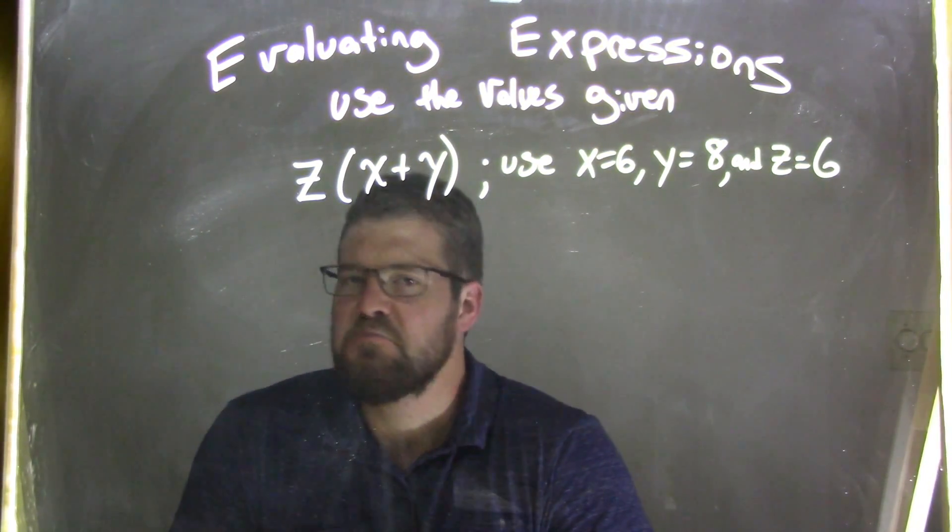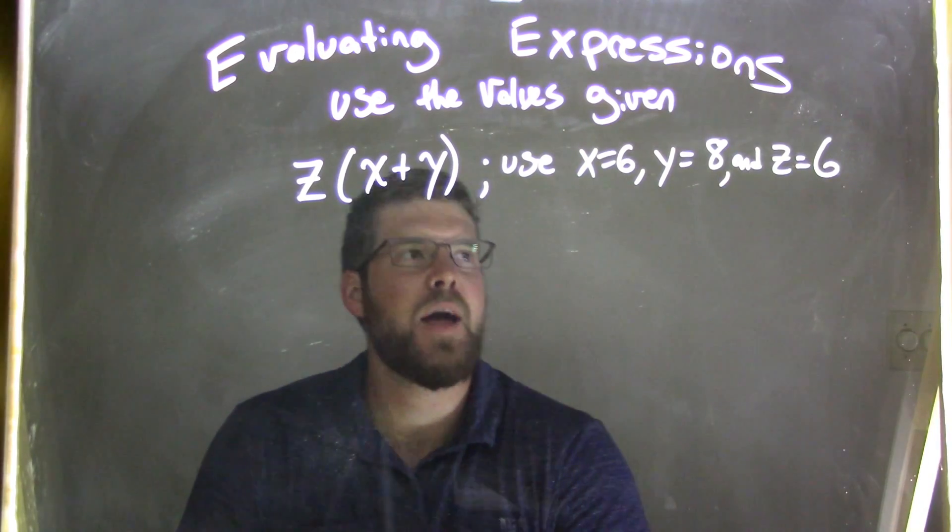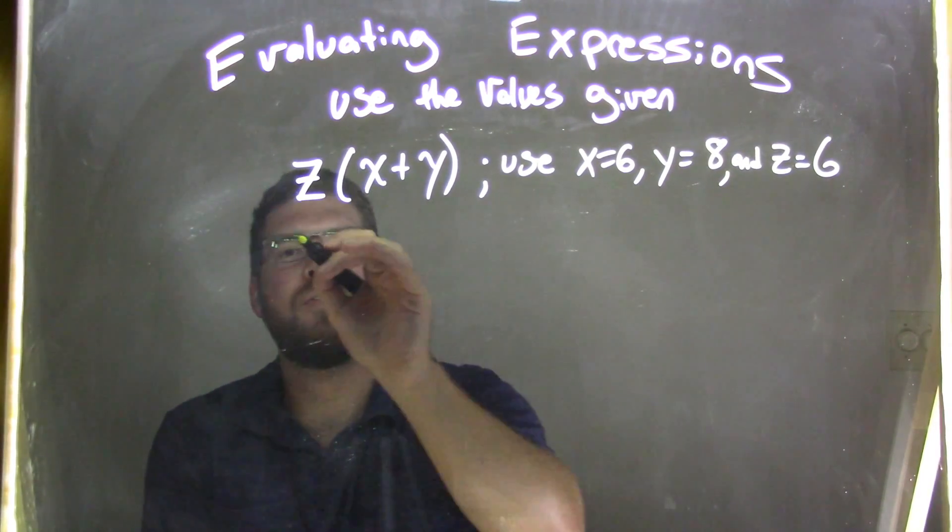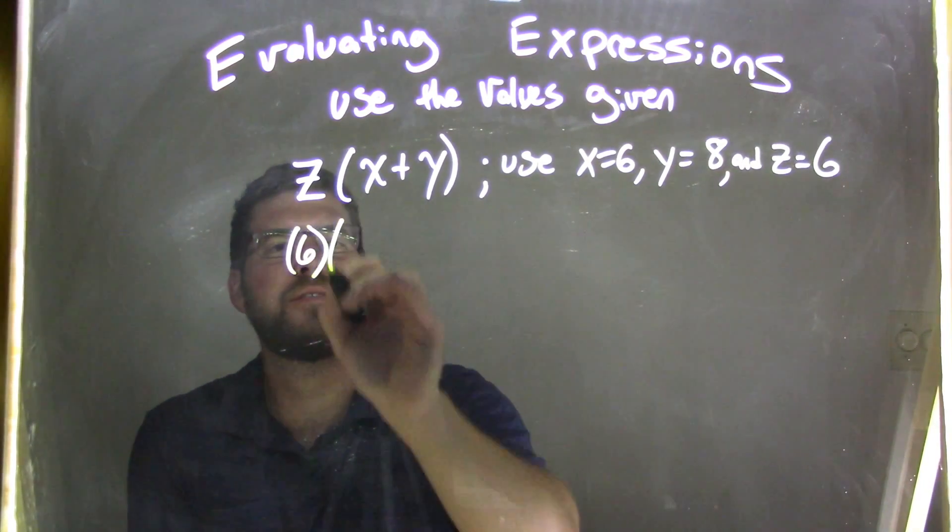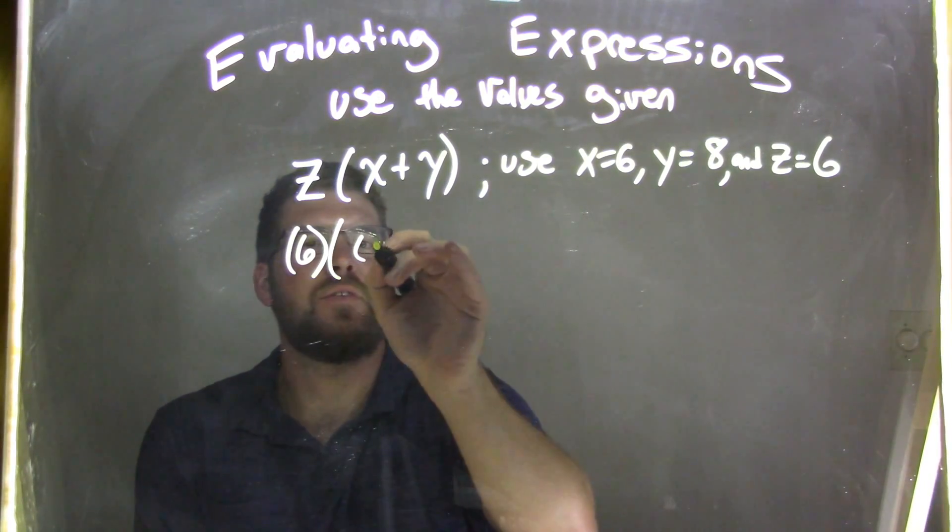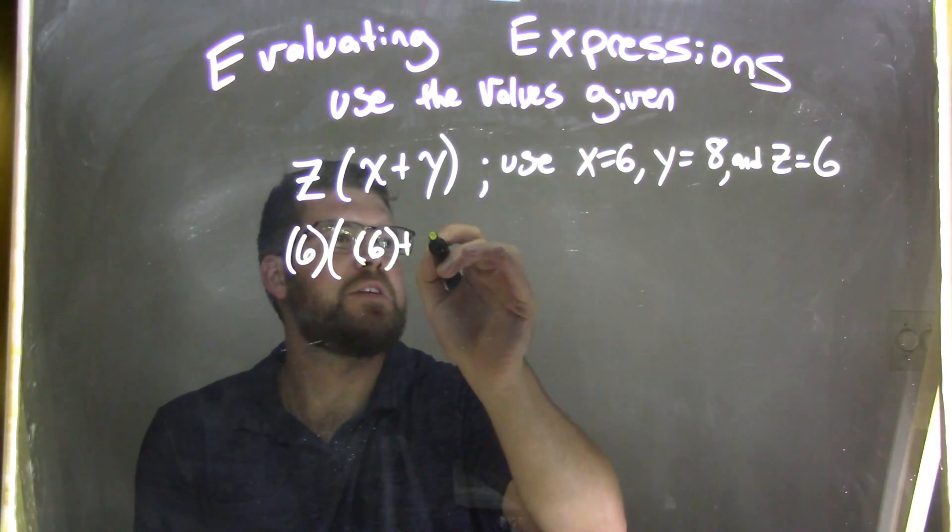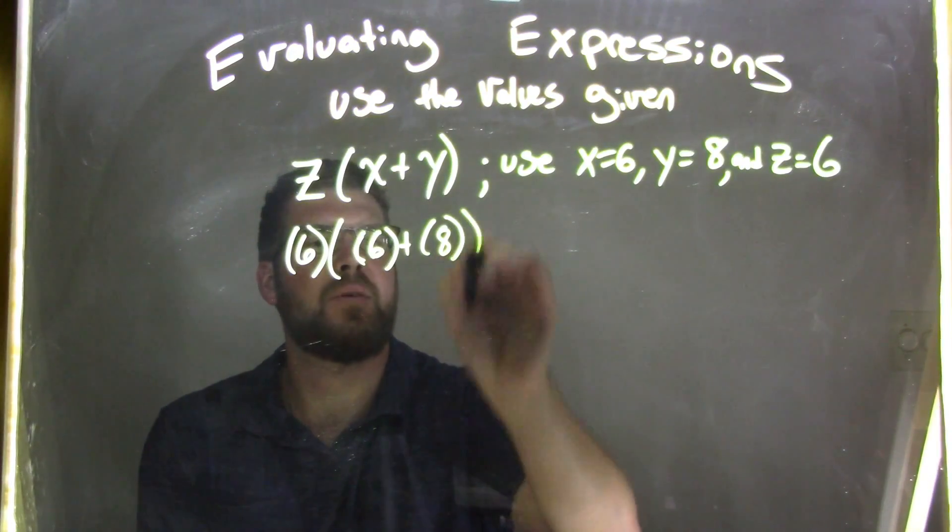Again, same thing as before, same steps. We substitute. So z is 6, put parentheses around it, 6. X comes out to be 6 as well, and plus y, which is 8.